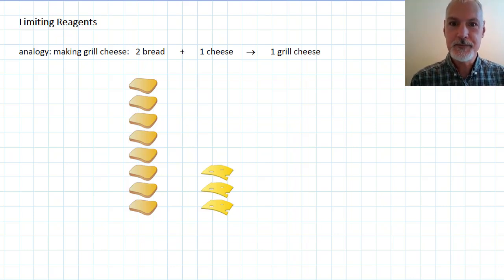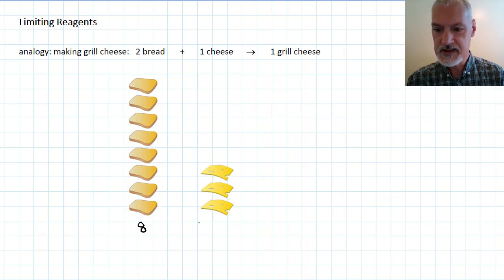Today's lesson is on limiting reagents, and to start off I want to use an analogy. Suppose you're manufacturing grilled cheese sandwiches and at your disposal we have eight slices of bread and three slices of cheese. The question is, how many grilled cheese could you make?